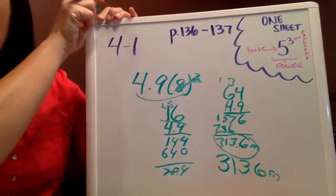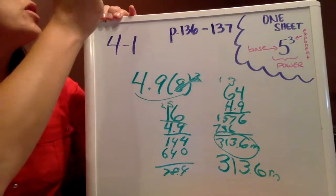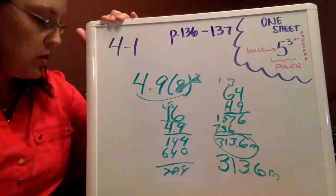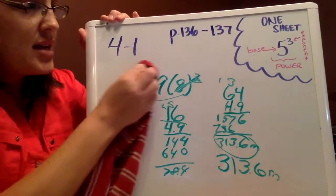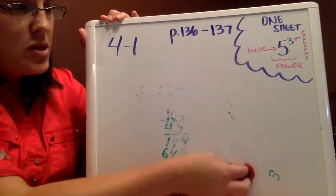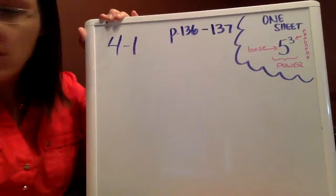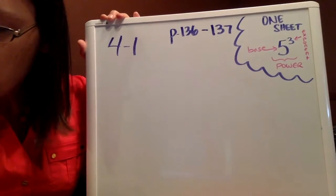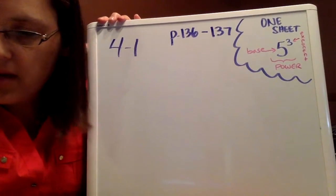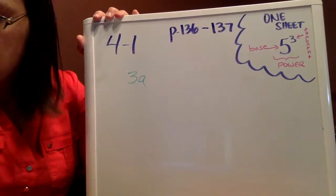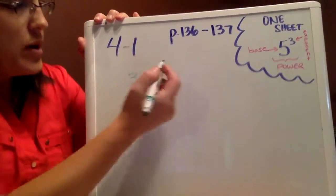Finally, example 3 has you evaluating expressions again. We've been doing that since chapter 1, so we're going to continue to practice that skill and substitute those values in and work with integers and rational numbers. You can look through example 3, but I will do the 3a, b, and c at the bottom.